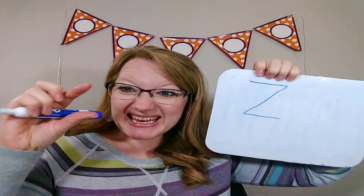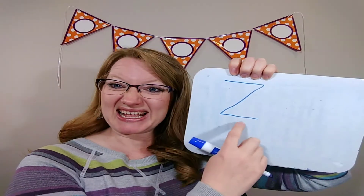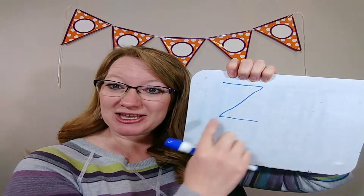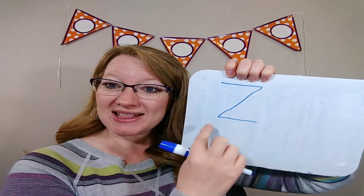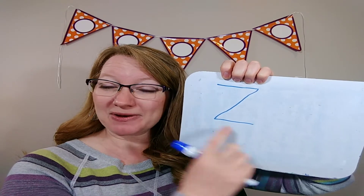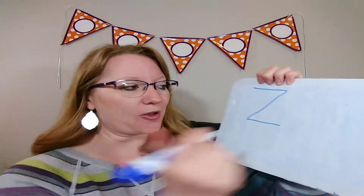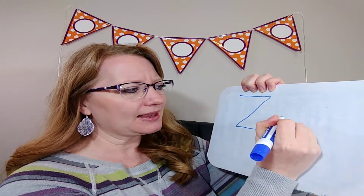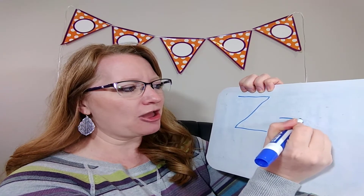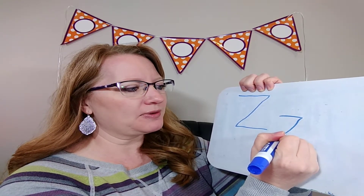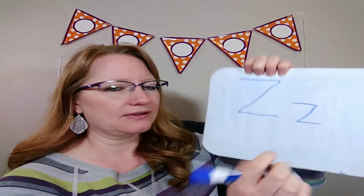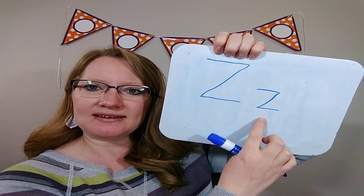Small Z is the same — we write it the same way as capital Z, it's just smaller. So baby Z, he keeps his head tall, stripes all the way down to his feet, and that is the small Z.